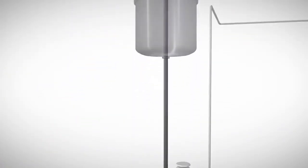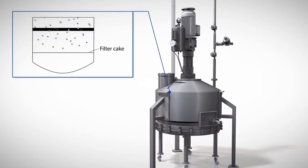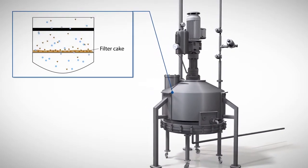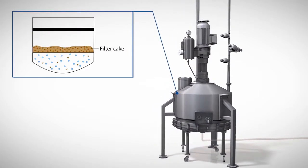After the adsorption process, the powdered activated carbon has to be removed again from the process liquid with the API. This is done in a separate filtration step, for example with a Nuche filter.